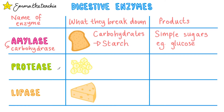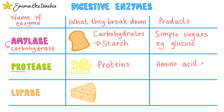Our next enzyme is protease. The start of the word is a hint — they break down proteins, for example these chickpeas. Now for the products, see if you can remember what proteins are made from. They're made from amino acids, so when they're broken down they turn back into amino acids.